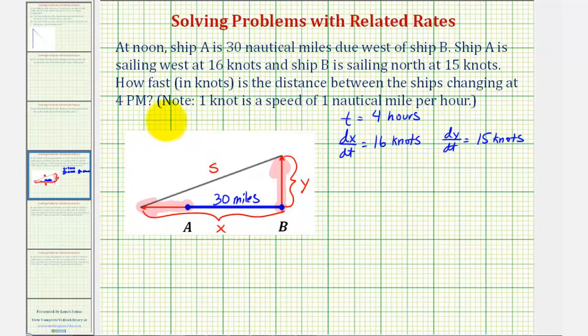And because ship B is sailing north at 15 knots, dY/dt equals 15 knots. And because we're trying to find how fast the distance is changing between the two ships, we're looking for dS/dt.